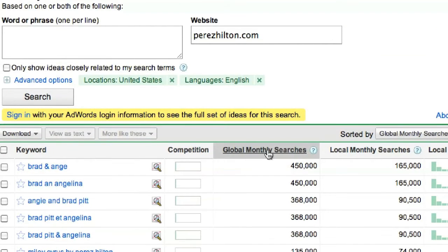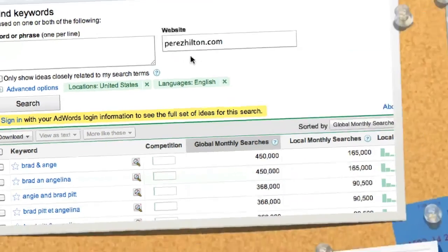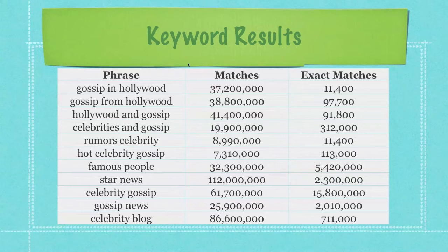Remember, I clicked on global monthly searches, and then I'm looking for low competition. So I started off with Perez Hilton. I'm going to go ahead and do the same thing with all the other websites that ranked on the first page. And after I do that, I'm going to end up with my main keyword phrases from all of those different websites. Now, I don't always trust Google's keyword tool, so I want to go in and make sure that my matches are actually good. So what I did was I typed in gossip in Hollywood, and it came back with 37,200,000 hits for this phrase.